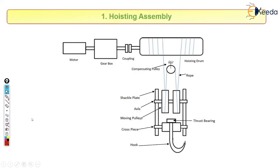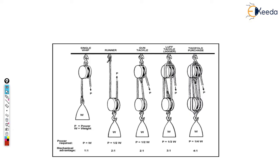First, let's understand why we need a multi-pulley system. In a hoisting mechanism we use multiple pulleys. If we have a weight W and we apply force P with only one pulley, the force required is equal to the weight of the load — whatever the weight, we need a similar force to lift it when using only one pulley.